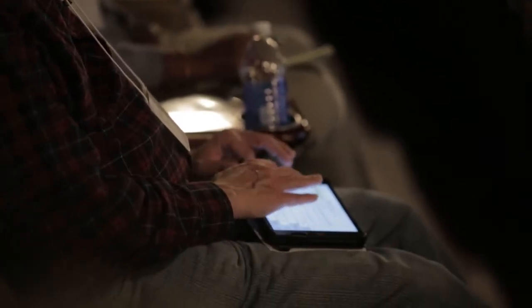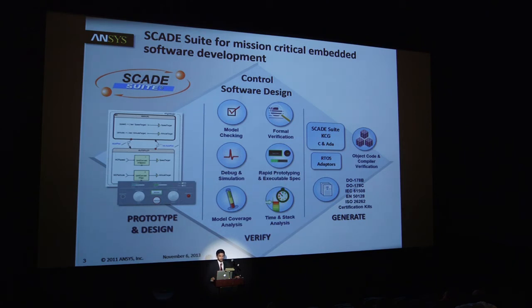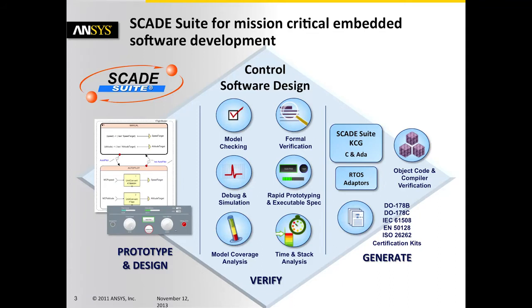There are essentially three products today at ANSYS that are in some way compliant or working with FMI. With the acquisition of Esterel Technologies, we have a couple of embedded software products. The first is Skate Suite, which is a tool used for designing and developing embedded control software — specifically for mission-critical applications such as aerospace, rail, and so on. It has a GUI front-end for model-based software engineering, with features for model checking, formal verification, debugging, and stepping through code. There's also a rapid prototyping capability, and on the back end the core technology is in code generation and optimization. Skate Suite supports code generation for C and ADA, with certification kits for industry standards such as ISO 26262.